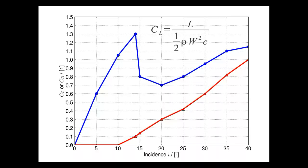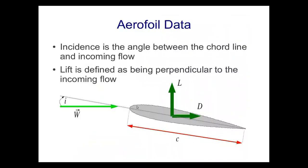Since it's a symmetrical aerofoil, there's very little lift at zero incidence; it increases to a maximum of about 1.3, then stall occurs — a complex aerodynamic phenomenon resulting in a reduction in lift and a big increase in drag. The incidence is the angle between the chord line and the incoming flow. The lift force is always defined as perpendicular to the incoming flow w, even if the incidence angle changes to around 40 degrees. This is partly convention and partly how data is collected in a wind tunnel, where it's easier to rotate the model than to change the flow direction. The drag force is always parallel to the incoming flow, though to a first approximation it can be ignored.